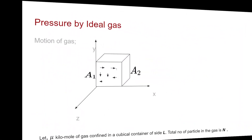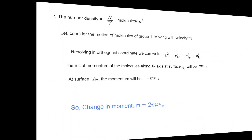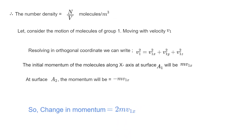Now for the pressure exerted by an ideal gas, let's see the figure. There are molecules in very random motion — some moving in one direction, some in another — and we have to find the pressure exerted by that ideal gas. We'll consider mu kilo-moles of gas confined in a cubical container of side l. The total number of particles of the gas is N. The number density is N/V, where V = l³.